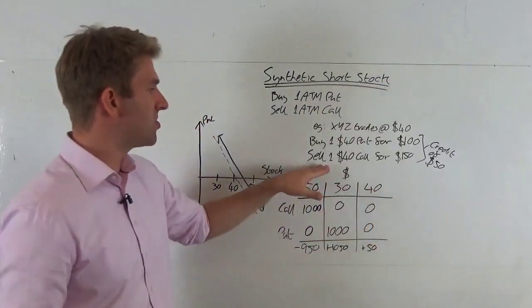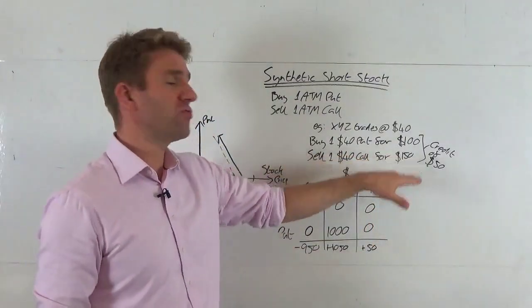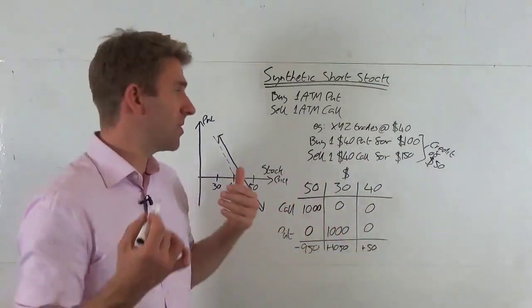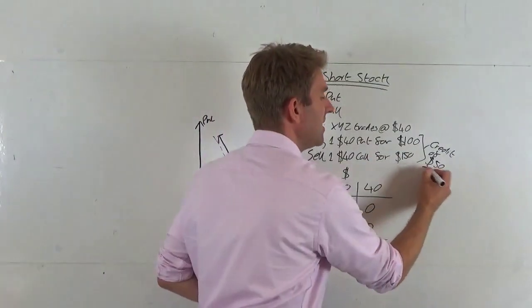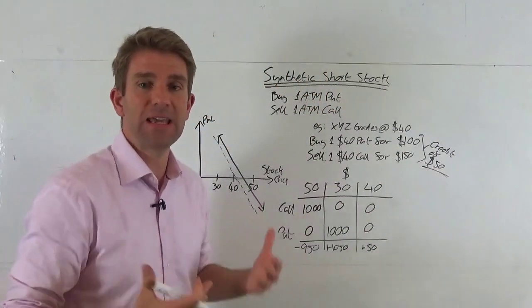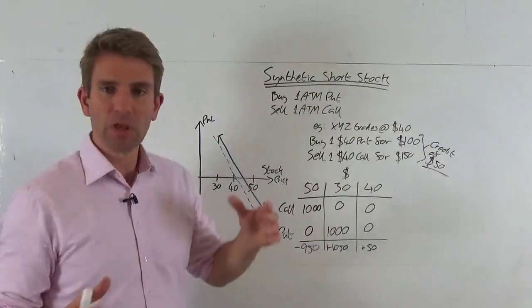We're selling the $40 call for $150 - it's trading at $1.50, we receive $150 back. So we get a net credit of $50. We receive $50 for placing this trade on.